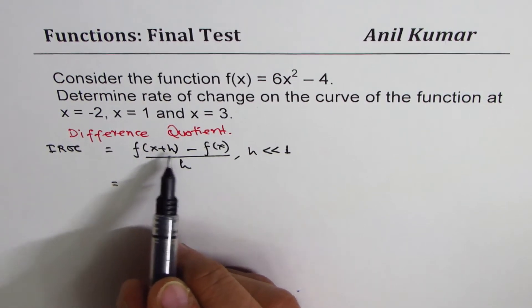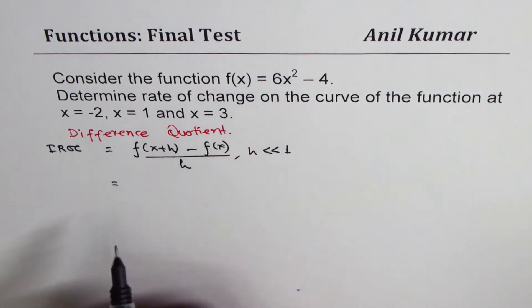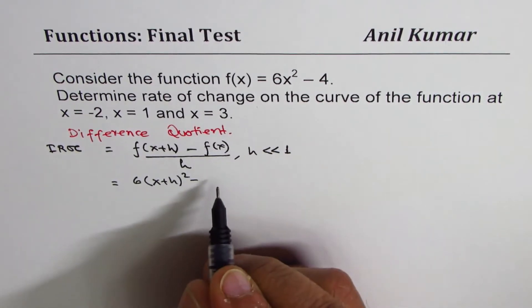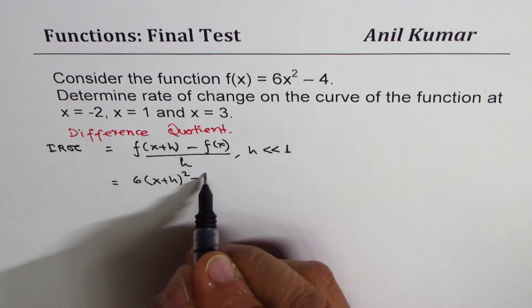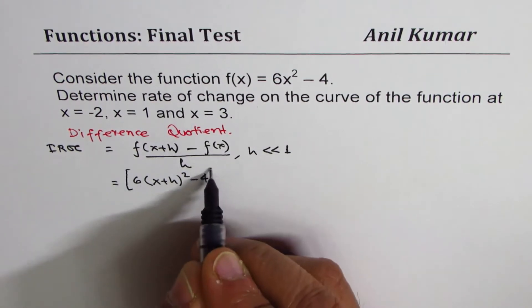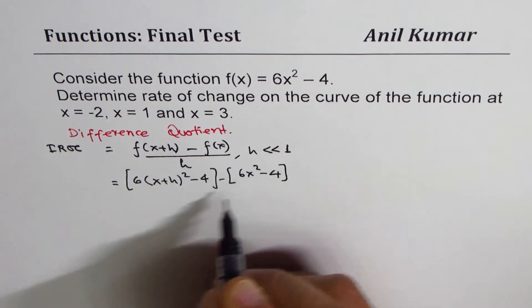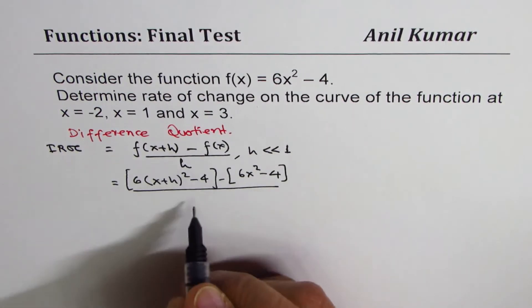Now, x+h means replace x with x+h. So we get 6(x+h)² - 4. That is the first part. Minus f(x), which is 6x² - 4, divided by h.